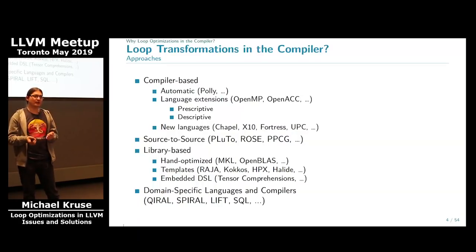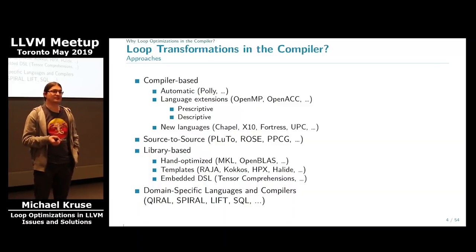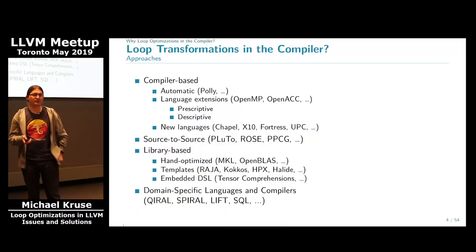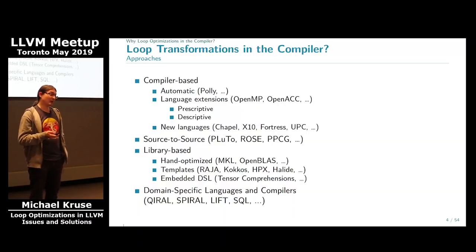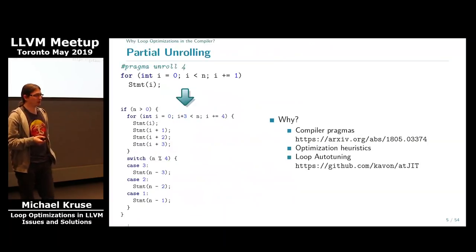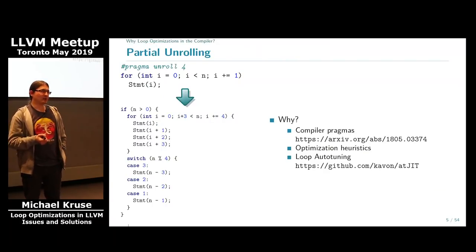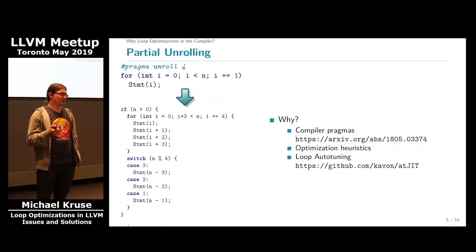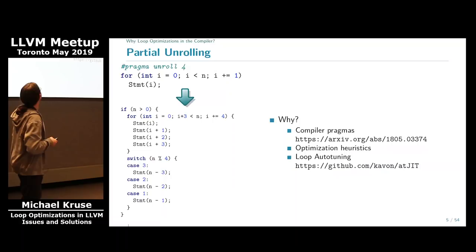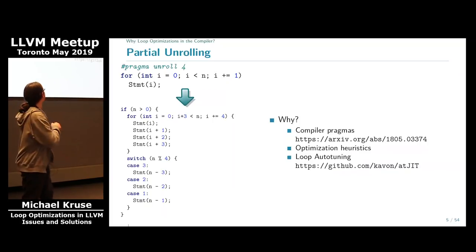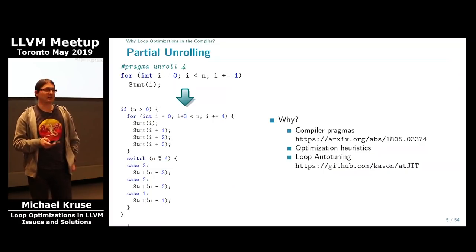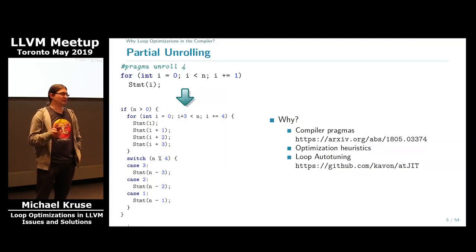There are also totally domain-specific languages meant to compile one basic thing — for instance, Chroma for Lattice QCD, which I worked on during my PhD, or Spiral and LIFT, which are BLAS-domain-specific languages. Whatever approach you prefer, the decision whether to have loop transformations in the compiler has already been made, since we already have transformations in there. For instance, loop unrolling is quite popular — you add a pragma in front of your loop and instead of writing the entire expanded loop yourself, you keep it more condensed.